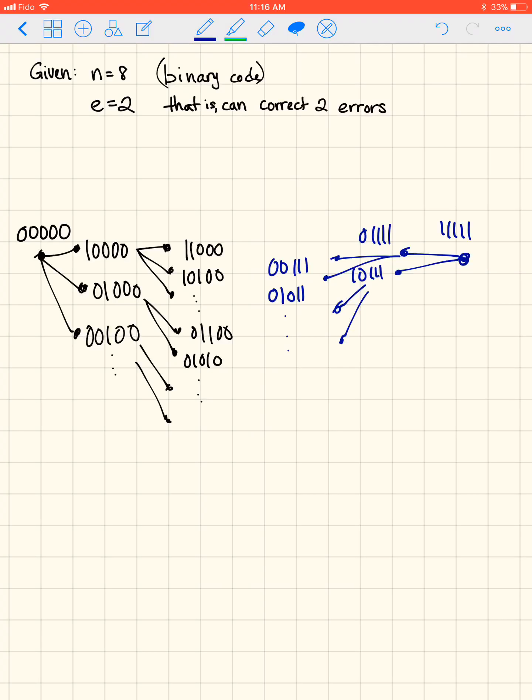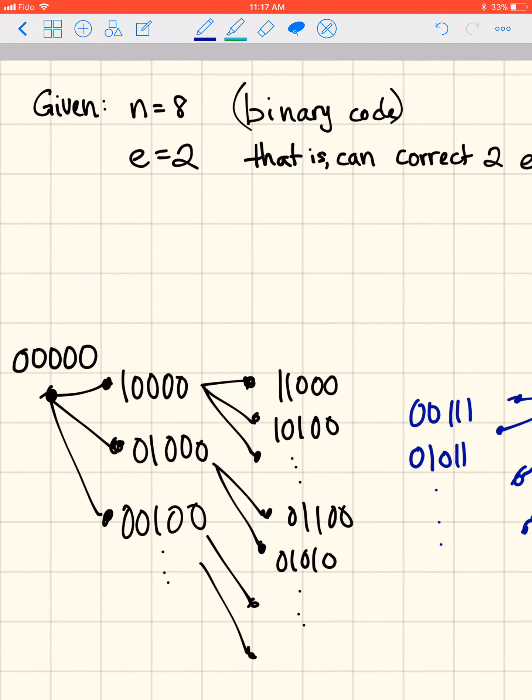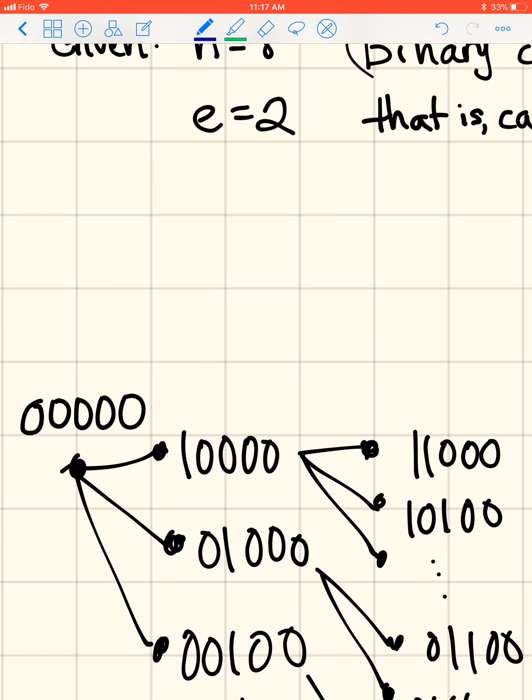So what we're given in this question is that we have a linear code and it's binary, which I haven't been saying, but all codes are binary in this unit. So we know that there are eight bits in each word, and we want it to be able to correct two errors, and we have to find the dimension. So what is delta, the minimum distance? That's the question here that we're trying to find the answer to.